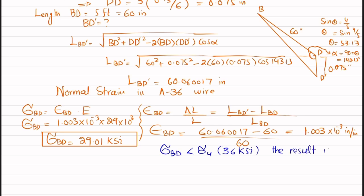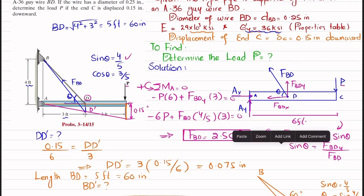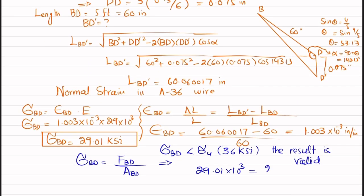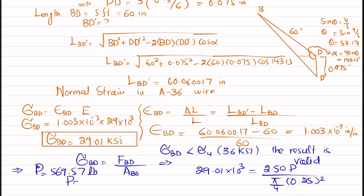Using σ_BD = F_BD / A_BD, where σ_BD = 29.01 × 10³ psi and F_BD = 2.50P from Equation 1, and the cross-sectional area A = (π/4)(0.25)² square inches: solving for P gives P = 569.57 pounds, or approximately P = 570 pounds.